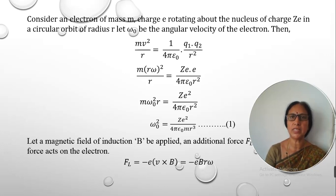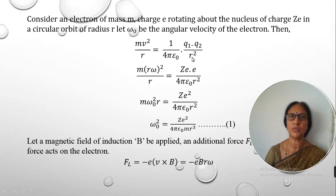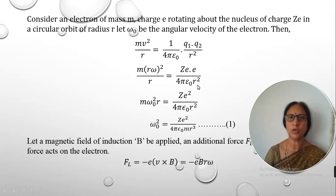In this theory we consider an electron revolving around the nucleus of charge Ze in a circular orbit of radius r, where e is the charge of the electron. When the electron is in its circular path, the centripetal force is balanced by the Coulomb's force of attraction, given by mv²/r = (1/4πε₀)(q₁q₂/r²). Substituting v = rω, and with q₁ as the nuclear charge and q₂ as the electron charge, this gives ω₀² = Ze²/(4πε₀mr³), called equation 1, where ω₀ is the natural frequency.